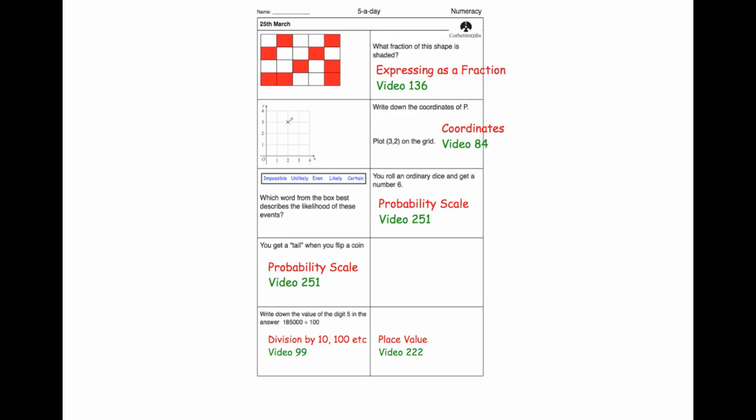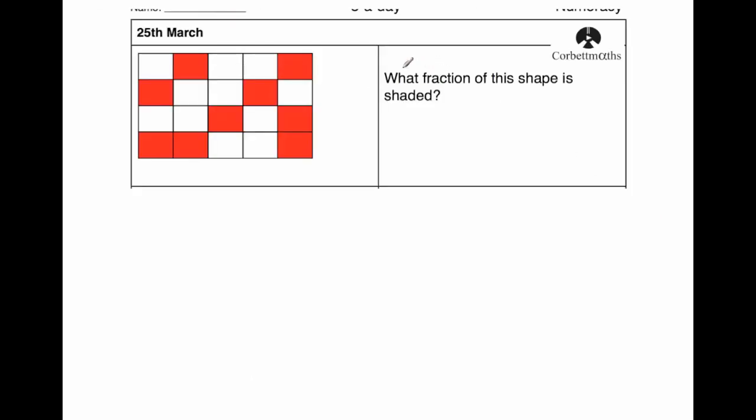So our first question. First question was, what fraction of this shape is shaded? So here we've got a rectangle. We count the squares, one, two, three, four, five, so five, ten, fifteen, twenty squares. So there's twenty altogether, so I'm going to write down twenty as the denominator.